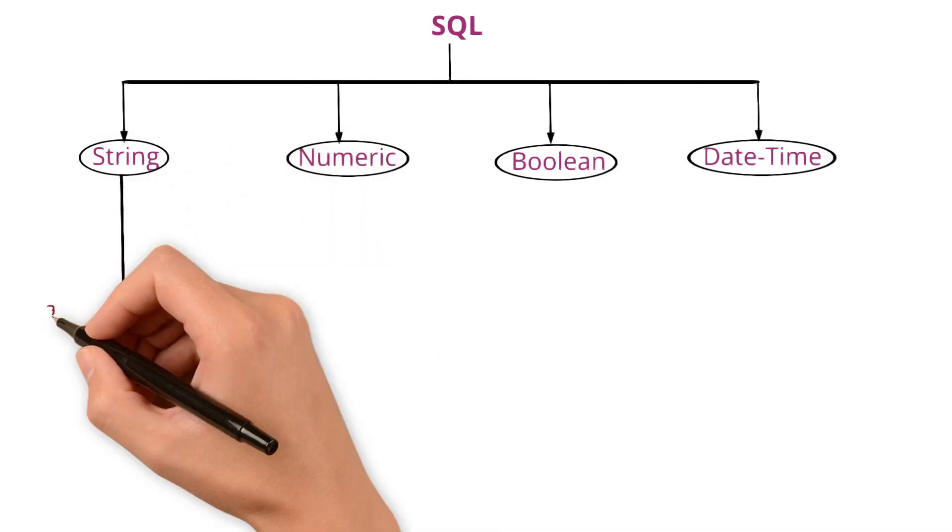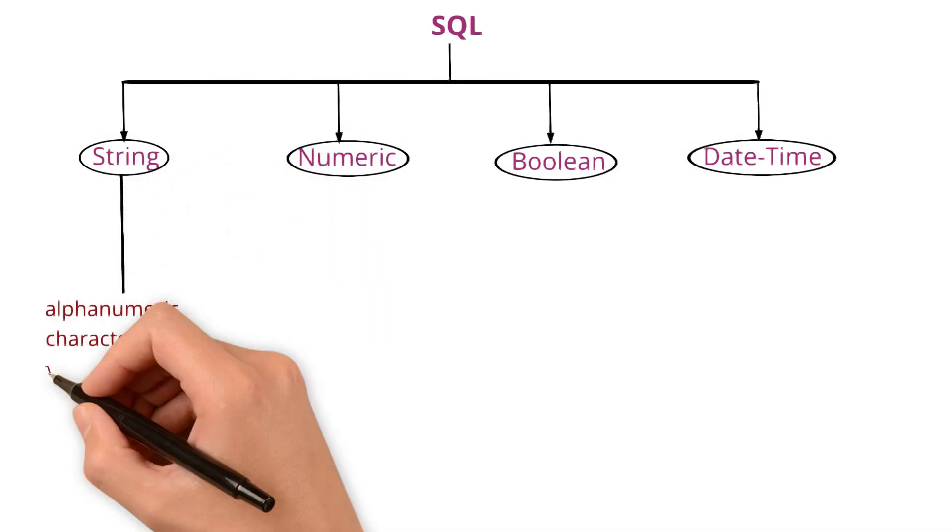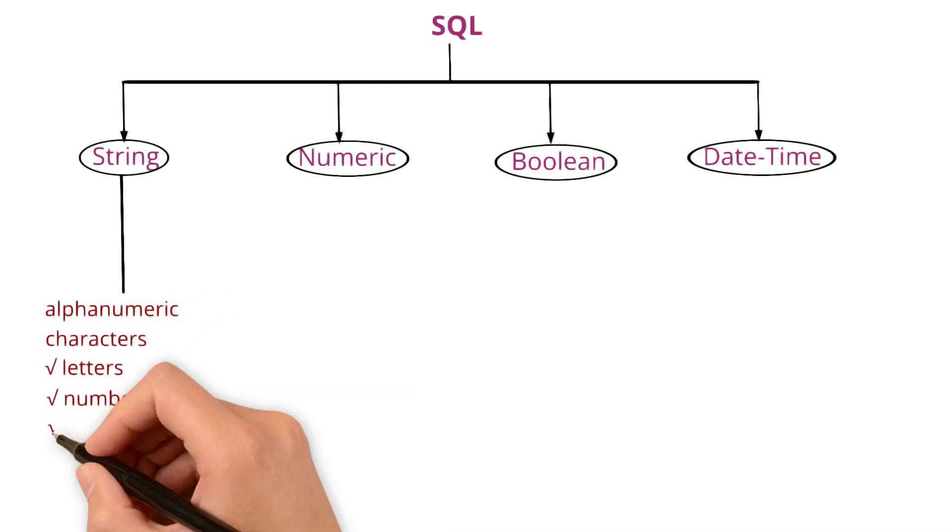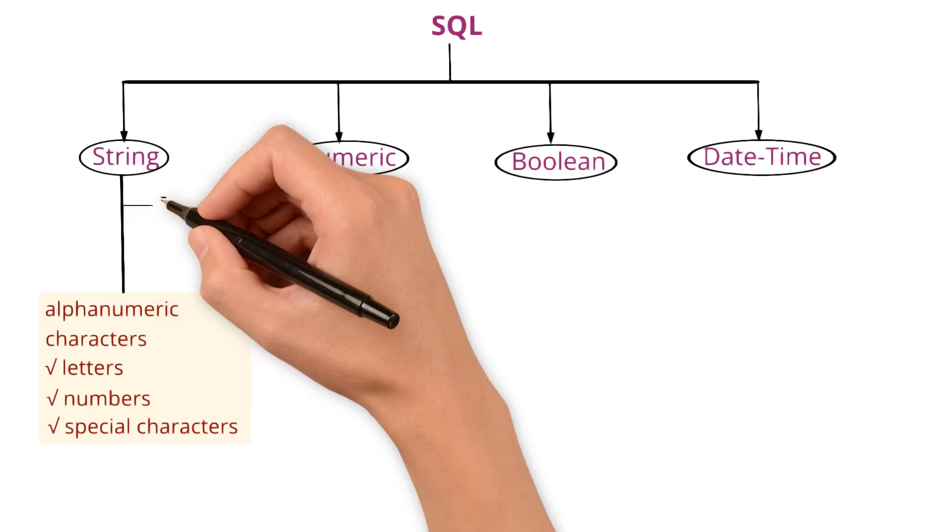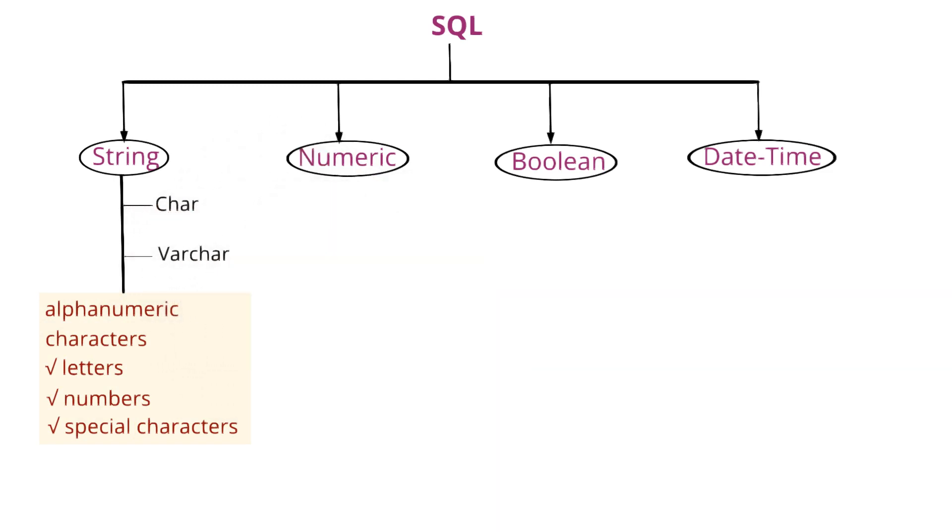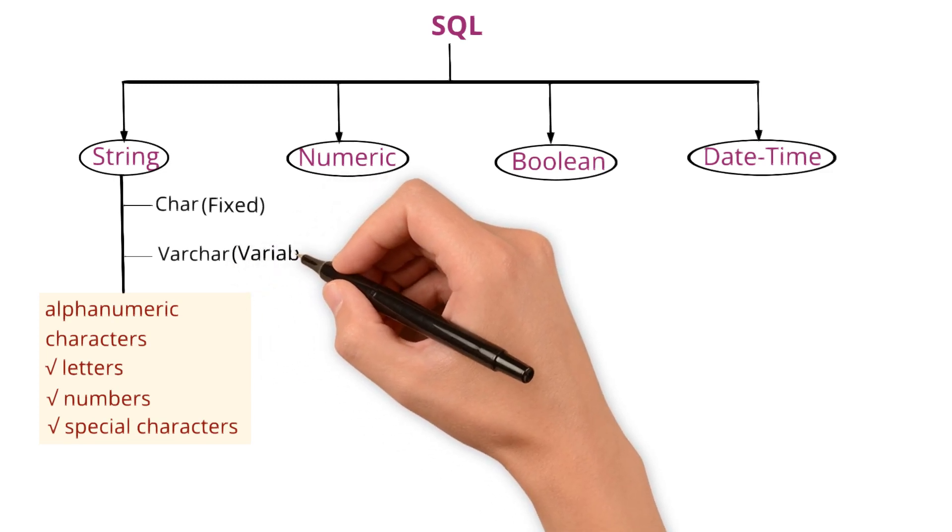String is used to store alphanumeric characters like letters, numbers and special characters. CHAR and VARCHAR are both string data types. The difference is, CHAR has a fixed length string while VARCHAR has a variable length.